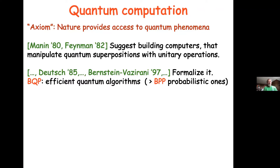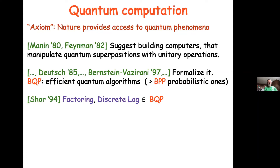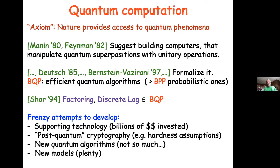Quantum algorithms are at least as strong as probabilistic ones. People found various examples until this earthquake: Shor published a paper showing that two particular problems — factoring and discrete log — can be solved efficiently by quantum computers. These are not arbitrary problems; they underlie essentially most cryptographic security systems. This sent the world into a frenzy, with billions invested by companies and governments to build quantum computers, though we are not there yet.